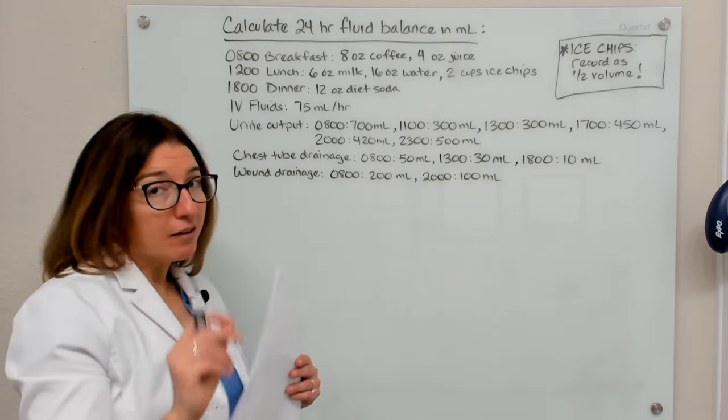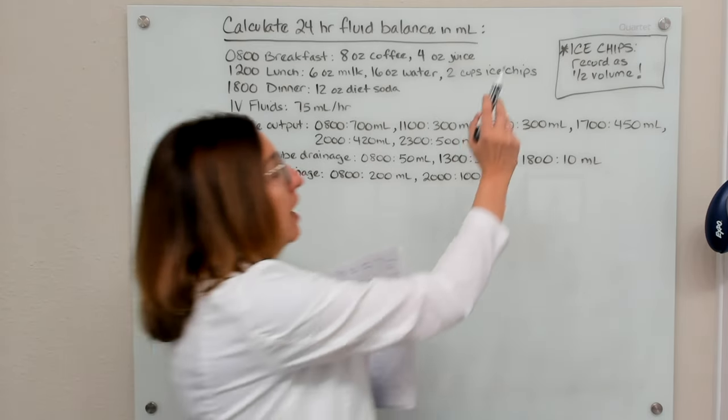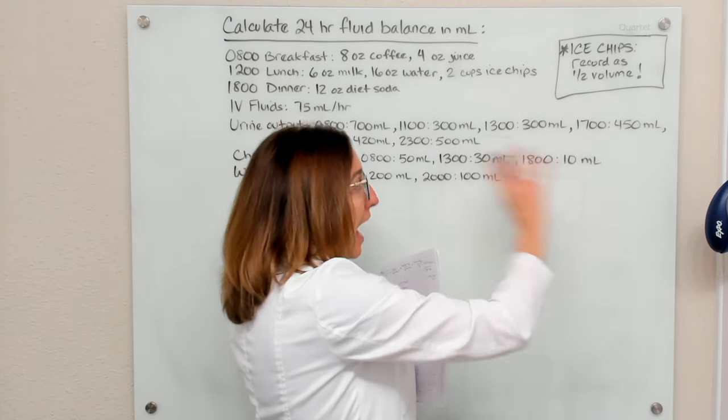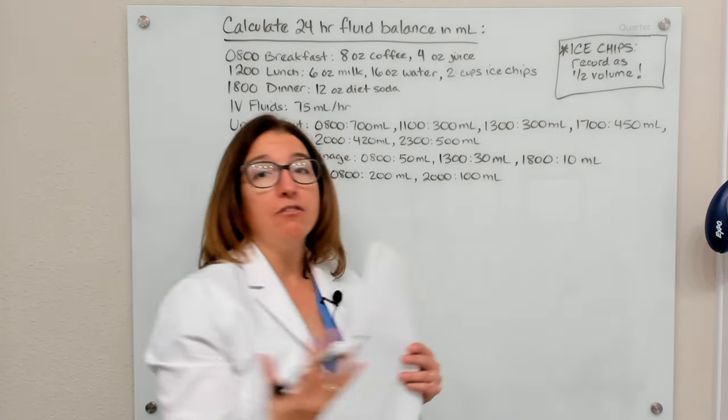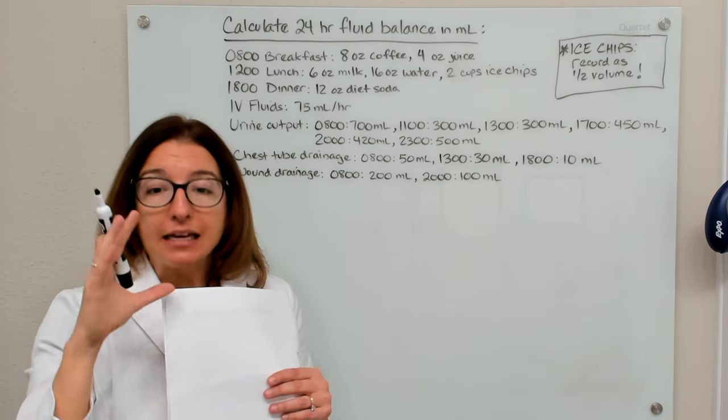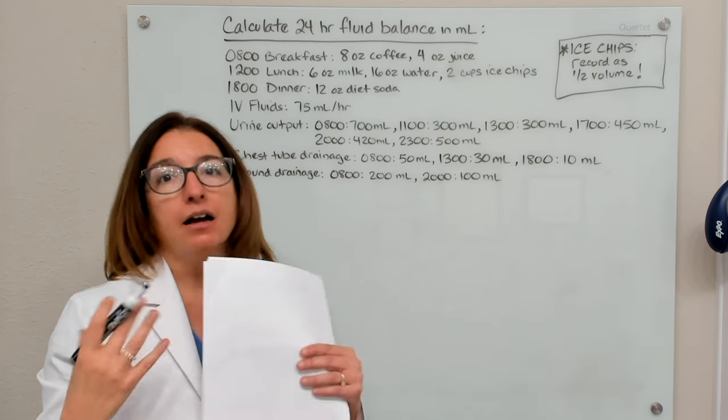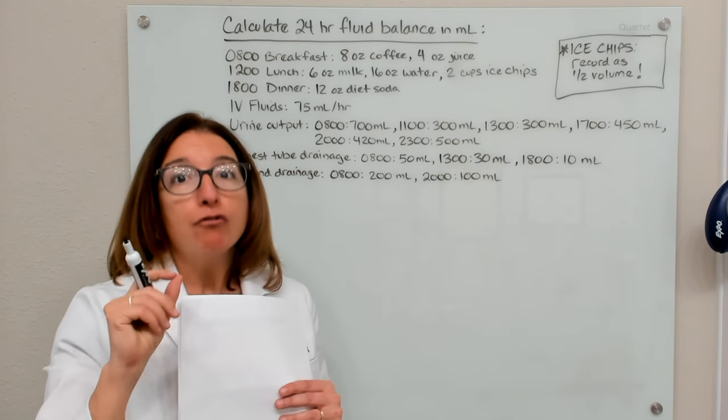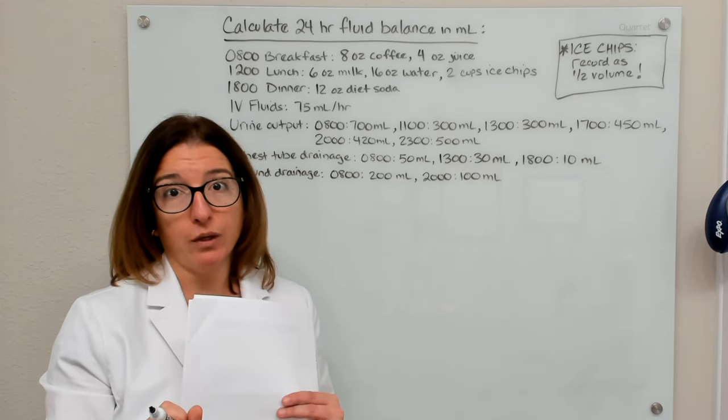Also, an important thing to remember is that for ice chips, you want to record that volume as half volume. So if the patient consumes a cup of ice chips, a cup is eight ounces, but you're going to record that volume as four ounces of fluid.